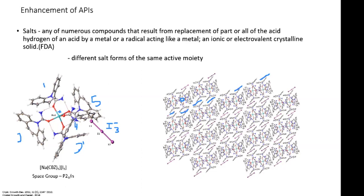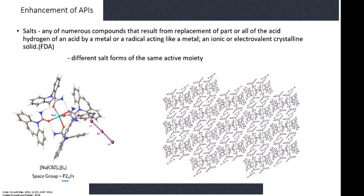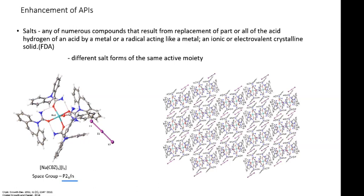Making a salt is another way to enhance APIs. This example is in space group P21/N — monoclinic with two-fold symmetry, one unique axis, and centrosymmetric. The inversion center here is not on an atomic position but in some region of space, used to generate the inverted structure of the asymmetric unit.